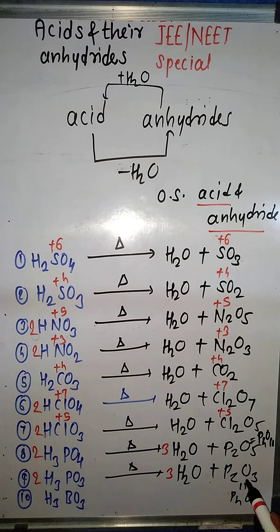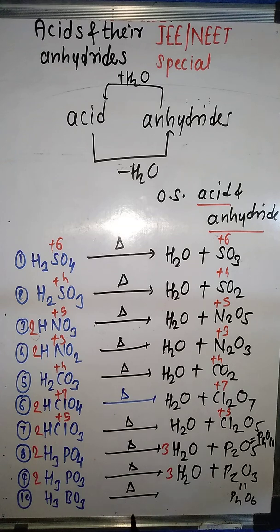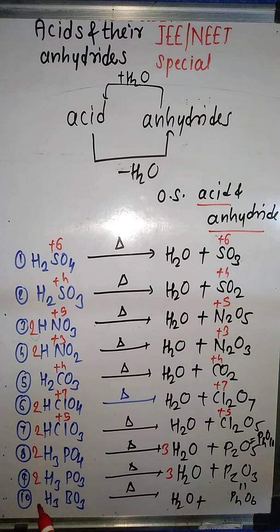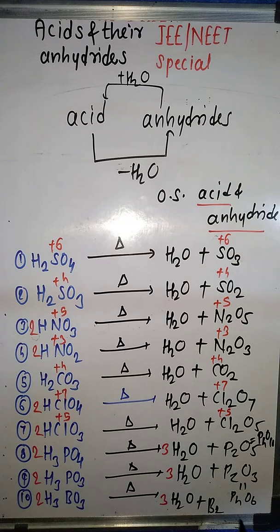Next example is H₃BO₃ (orthoboric acid). Heating with a strong dehydrating agent gives H₂O as first product. There are three hydrogens in H₃BO₃ and two in H₂O, so we multiply by two and three respectively to balance hydrogens. What's left behind is two boron and three oxygens, giving B₂O₃. So B₂O₃ is the anhydride of H₃BO₃.